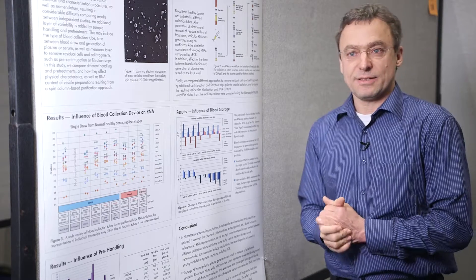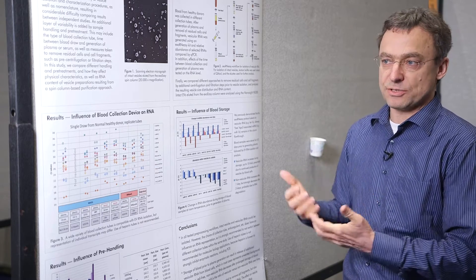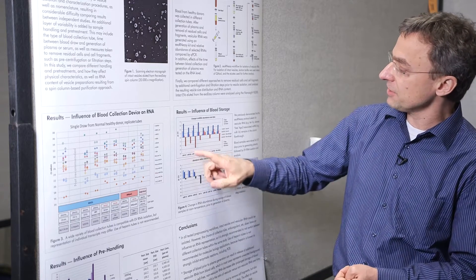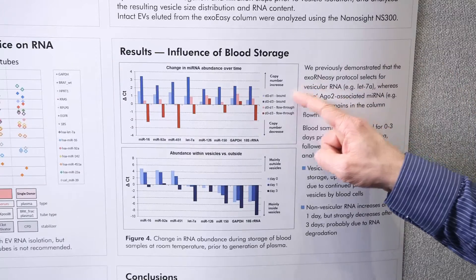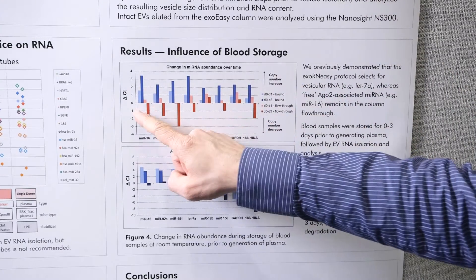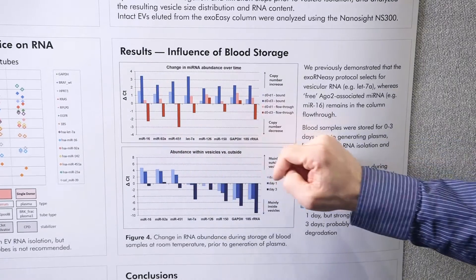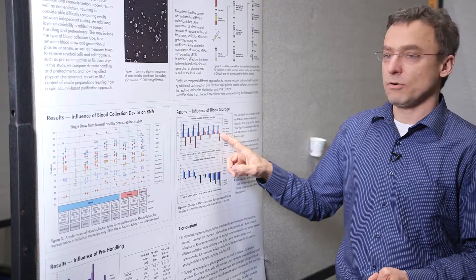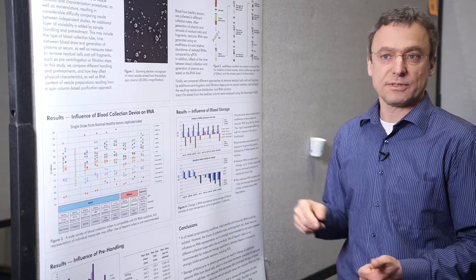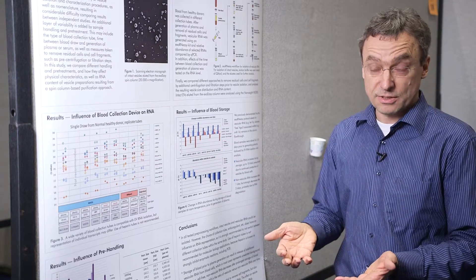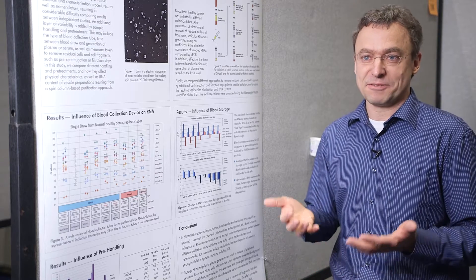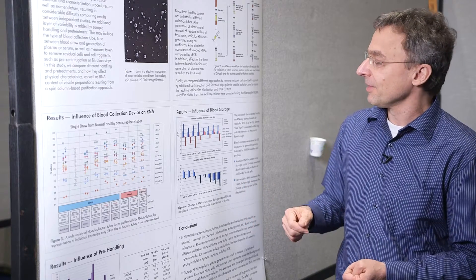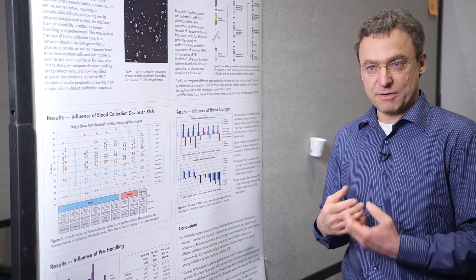We were interested in how these two populations are affected by blood storage. The blue bar is the bound vesicular fraction, and a positive delta CT means an increase in RNA. Basically all of these go up during storage — about two-fold after one day and up to eight-fold after three days. This is a really huge increase and it's all coming from blood cells — essentially unwanted background — which tells you it's better to use the blood fresh. Looking at the flow-through, this is the non-vesicular RNA.